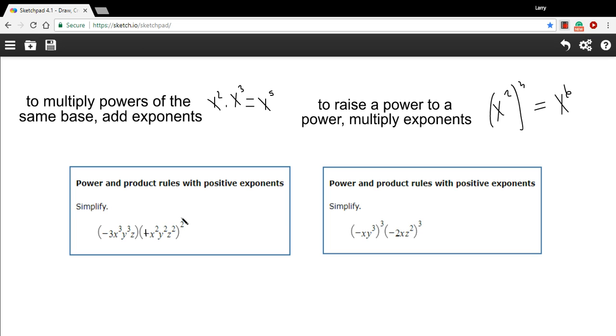And then we're going to apply this power, this power of 2, to each of the pieces. So x squared to the second power is x to the 2 times 2, or x to the fourth. And similarly, y squared to the second power would be y to the fourth. And z squared to the second power would be z to the fourth.